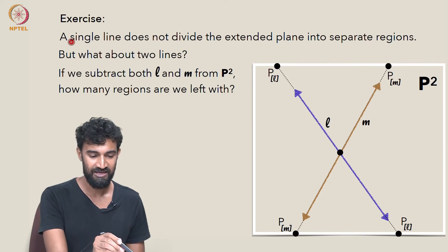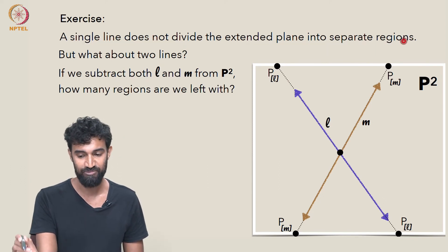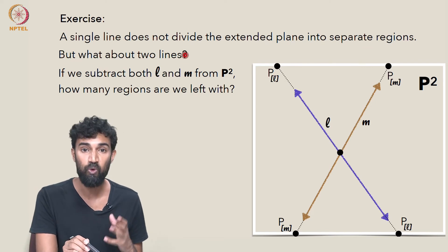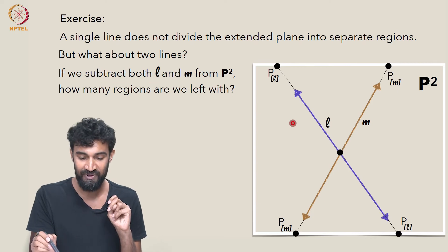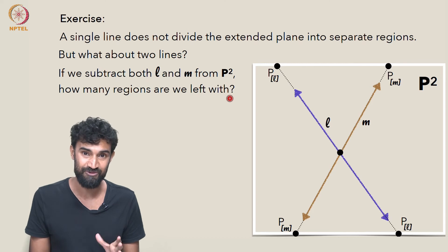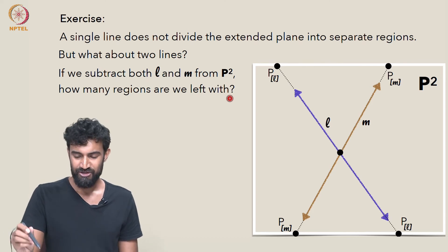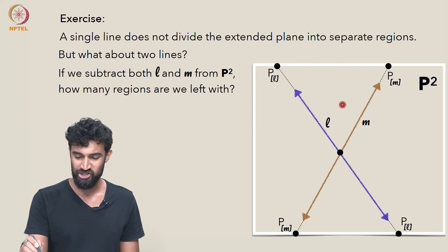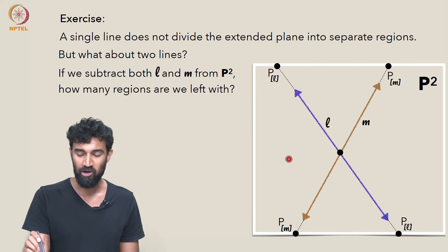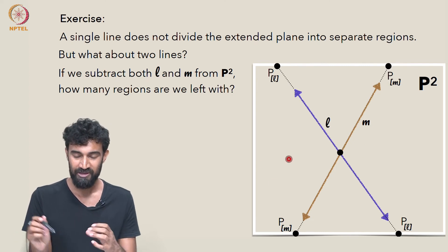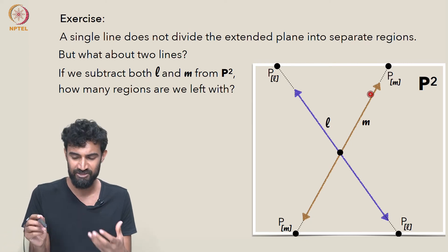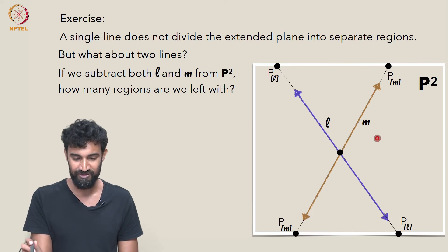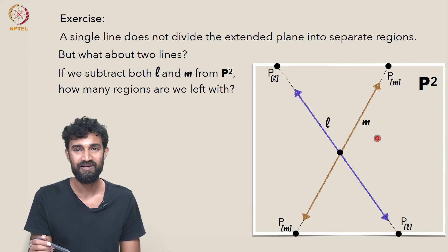As an exercise: we've seen that a single line does not divide the extended plane into separate regions. But what about two lines? If we subtract both L and M from P2, how many regions are we left with? As a hint, try starting somewhere in a region and traveling along a line. Draw more lines through the center point and see if you can get from one region to another. Maybe they're all one region, or maybe there are some distinct regions — maybe it's not four regions like it looks. How many regions are there? That's an exercise for you to try.